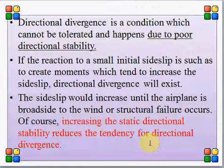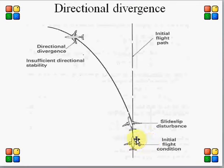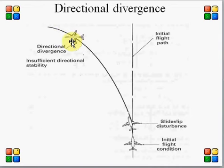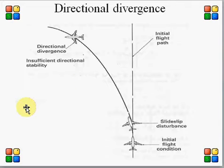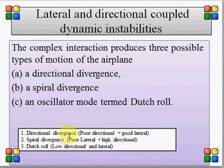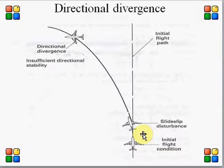We have seen something called directional divergence, where an aircraft deviates from its initial path. When you look at this, the aircraft is simply yawing — it is not rolling. It has good lateral stability but poor directional stability. Directional divergence happens when the aircraft has poor directional stability and very good lateral stability characteristics, so it yaws and deviates from its path without rolling.